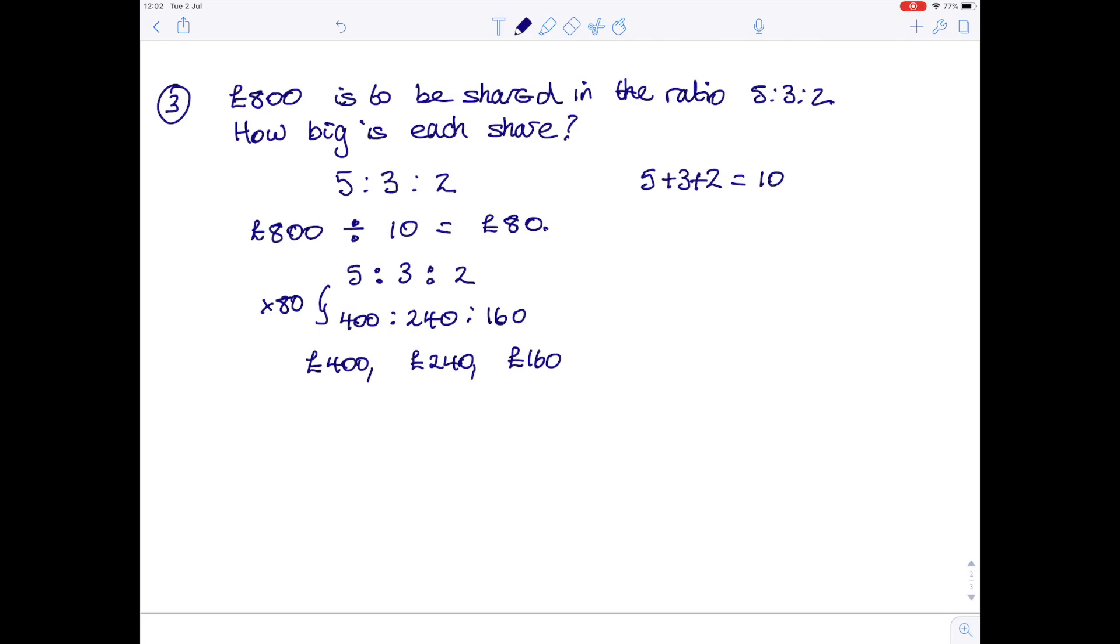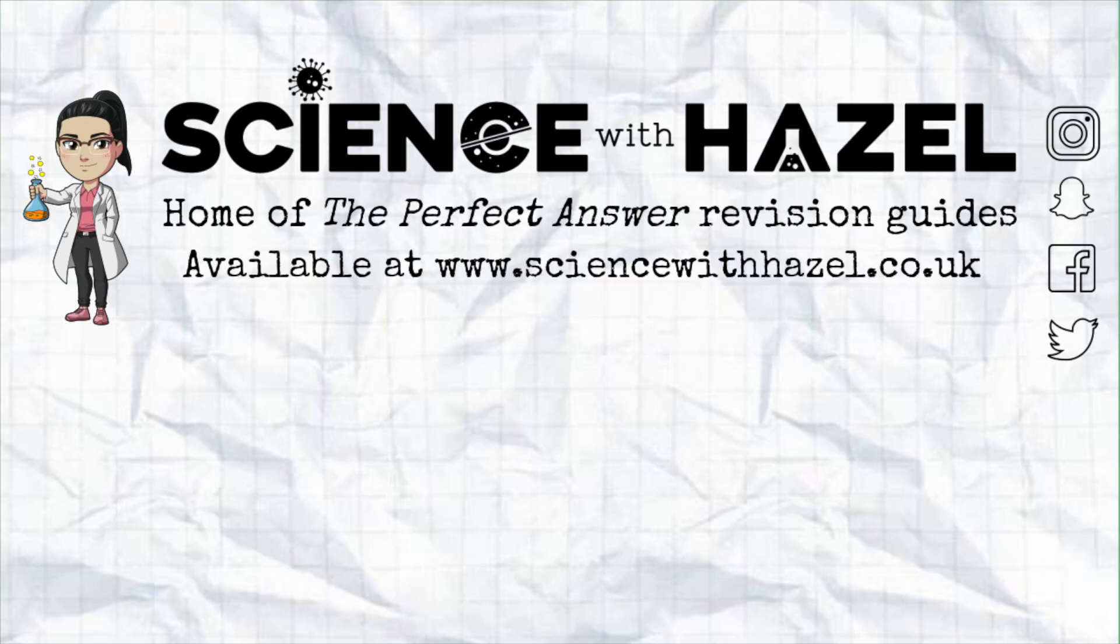And again as a quick check, if you add those together, 400 plus 240 plus 160 gives you the original £800.